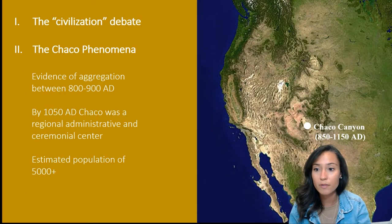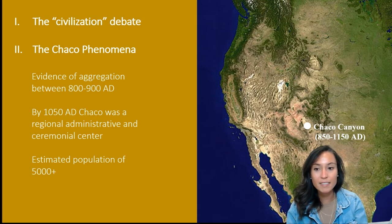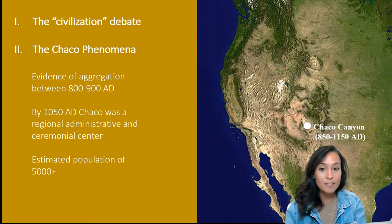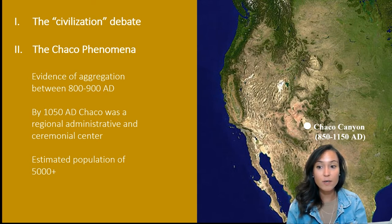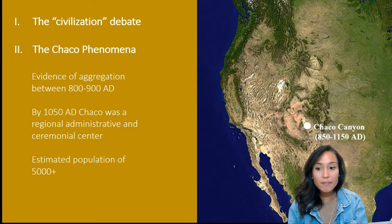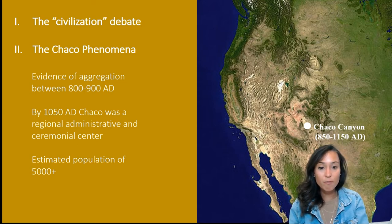So let's start with Chaco. Chaco Canyon contains evidence for early sedentary village structures around 500 AD. During the 800s AD, summer rainfall was highly variable, and instead of dispersing, people in the region began to aggregate into what is now the San Juan Basin. By roughly 1050 AD, it's estimated that over 5,000 people were living at Chaco Canyon, which became the center of a vast regional, ceremonial, administrative, and economic system.